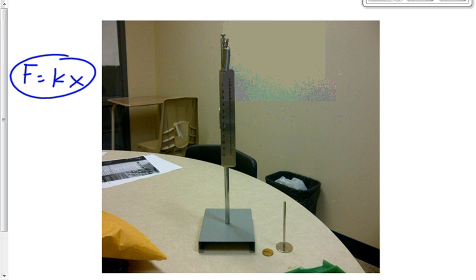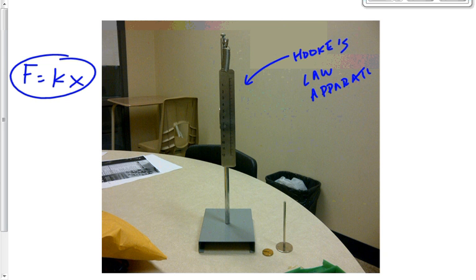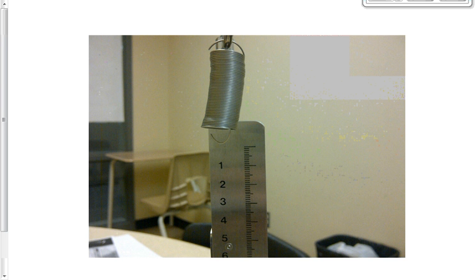We're going to do that with this apparatus that you see up on the board right now, that we call a Hooke's Law apparatus. Notice on that Hooke's Law apparatus, there's a spring. That spring is a spring with a fairly low spring constant. In other words, it will stretch quite easily. Right now, it's not stretching at all though. It's at its equilibrium position right now.